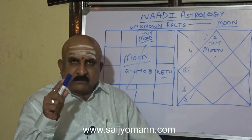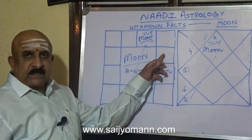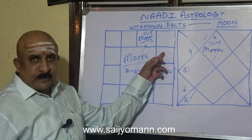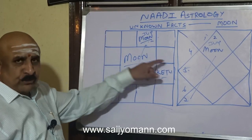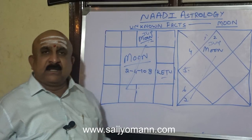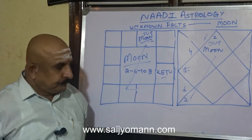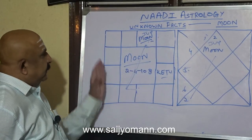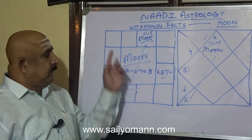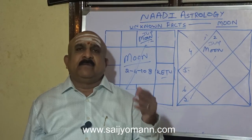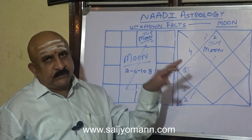This 'looking alike and having the same qualities' also happens when there is parivartana yoga of Moon and Jupiter — Moon in Pisces, Moon in Cancer parivartana yoga, or Moon in Sagittarius. In those cases also you can say that both look alike. The twin houses: only if Moon is placed in these four houses are there chances of the mother being one of twins — one of the twin babies, the mother of the native will be one of the twins.